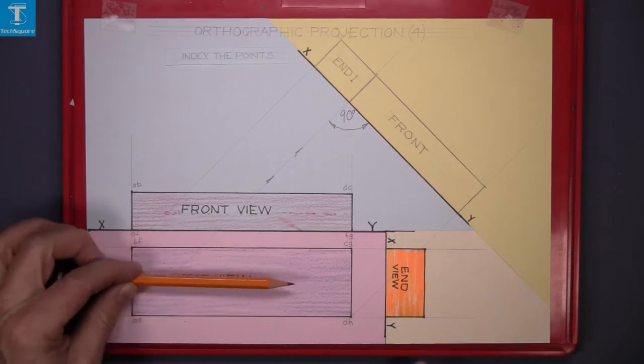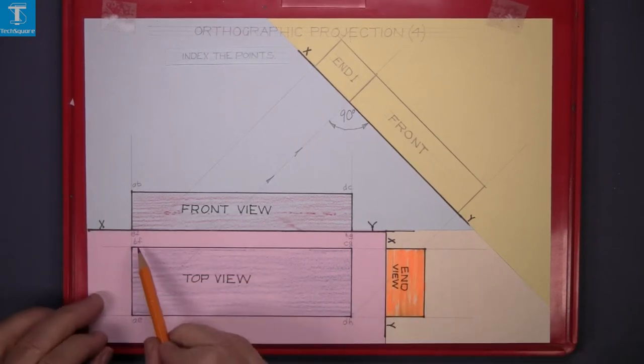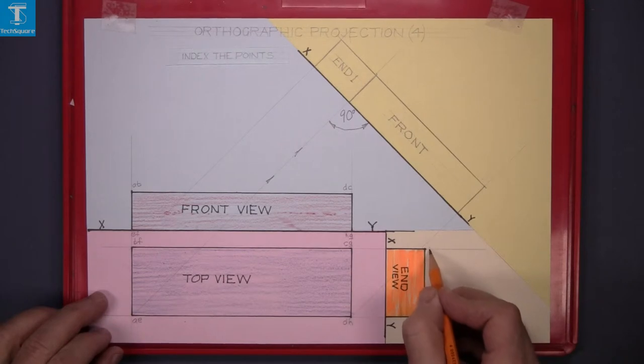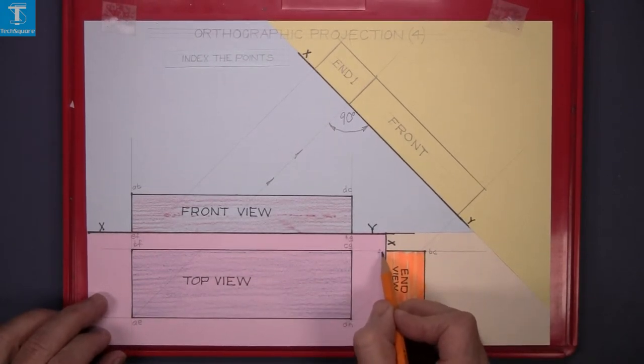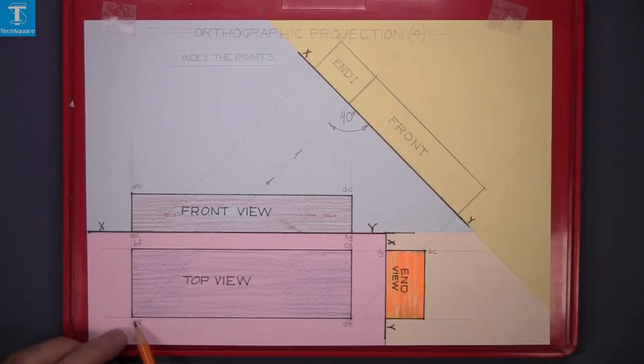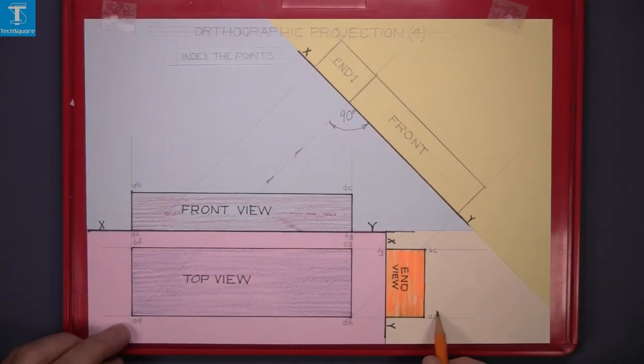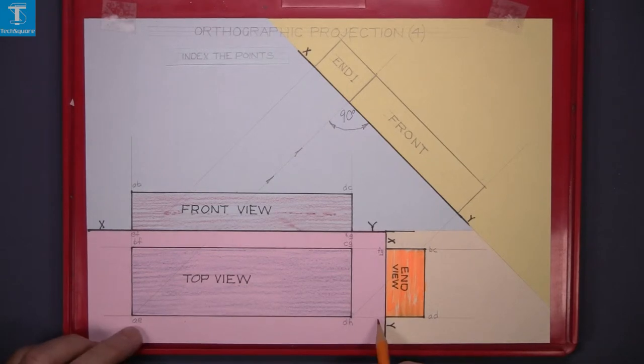Looking at it from the left: B, C is the top, bottom one is F, G, A, D is the top, and H is the bottom.